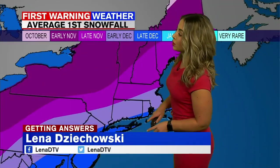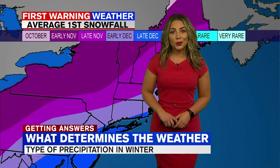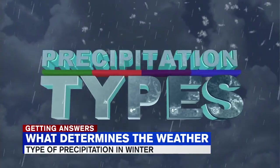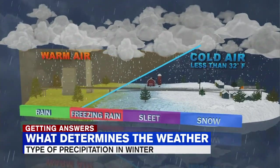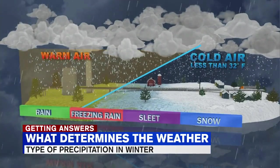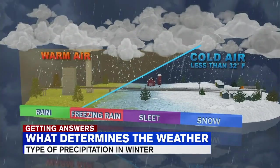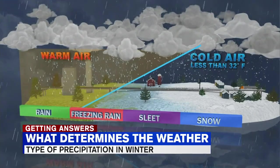Here in Western Mass, our average first accumulating winter snowfall typically occurs in late November. But this year, we got that well ahead of schedule just before Halloween in October. Snow is not the only type of precipitation we have to worry about in the winter months. Rain occurs when the entire column of air from cloud to ground is above 32 degrees Fahrenheit, while snow occurs when the entire column of air is below 32 degrees Fahrenheit.